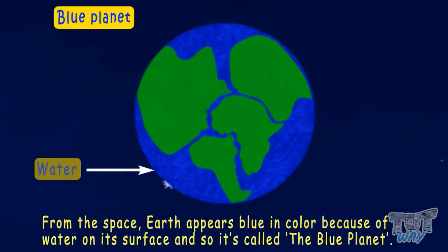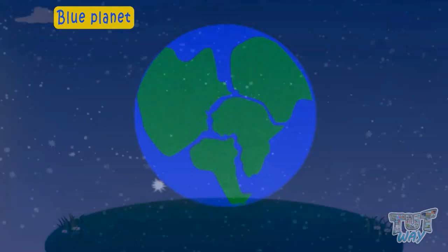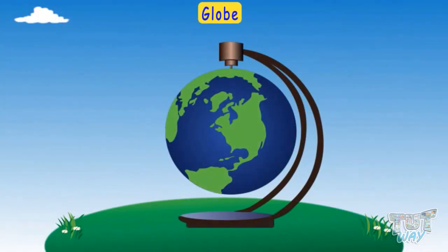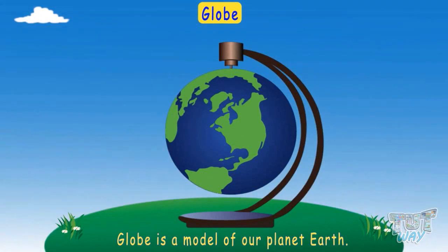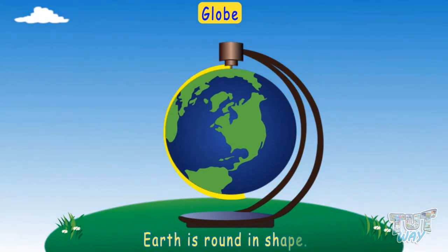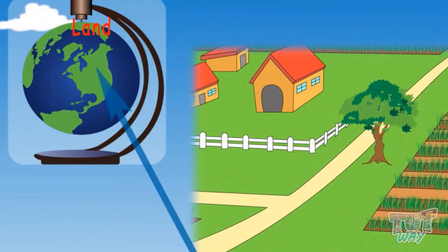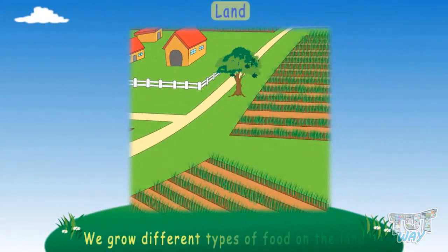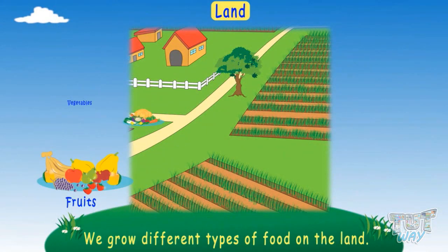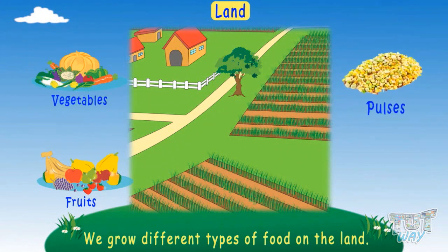From space, the Earth appears blue in color because of the water on its surface, and so it's called the Blue Planet. A globe is a model of our planet Earth. Earth is round in shape and we live on the land. We grow different types of food on the land, like fruits, vegetables, pulses, and grains.